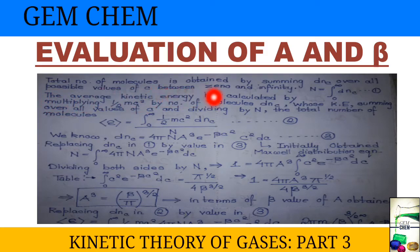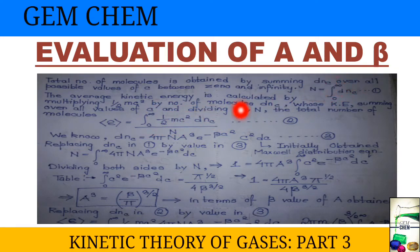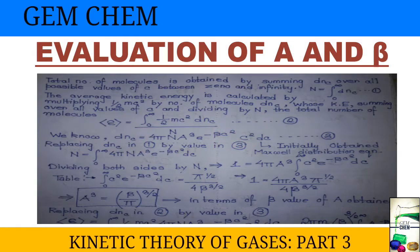The average kinetic energy is calculated by multiplying half mc² by the number of molecules dNc, summing over all values of c, and dividing by N. We know the Maxwell-Boltzmann distribution equation, which we have already derived: dNc = 4πN a³ e^(−βc²) c² dC. Replacing dNc in the total number equation with this expression, we get N equals the integration from 0 to infinity of 4πN a³ e^(−βc²) c² dC.